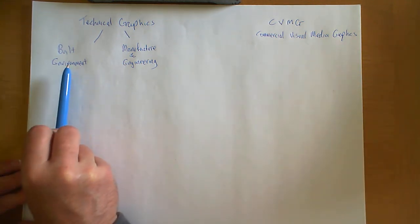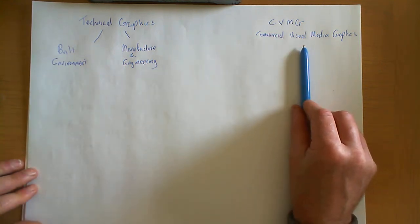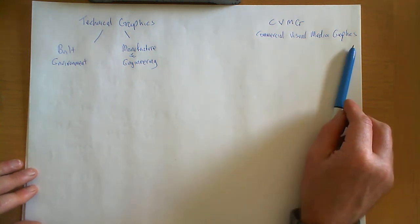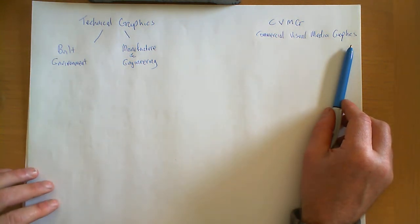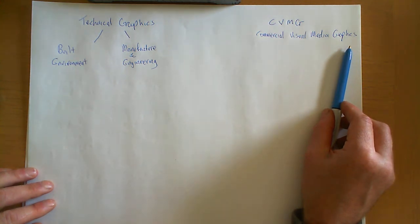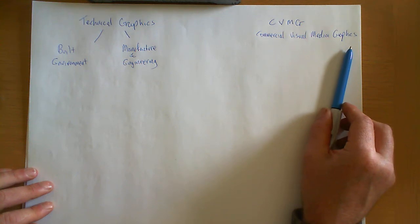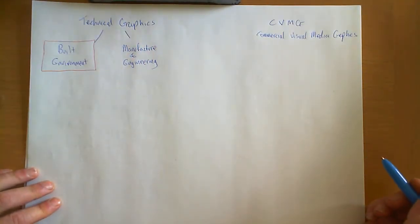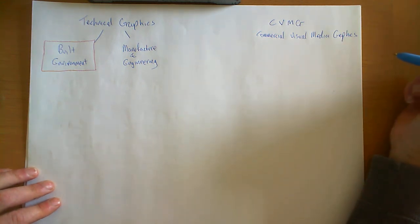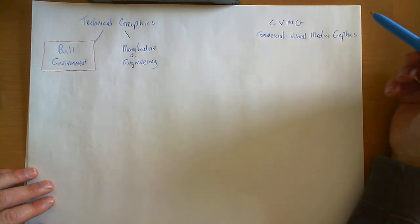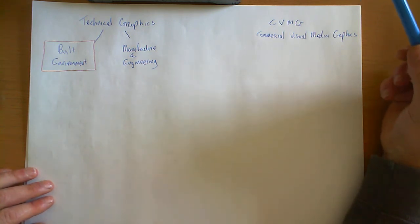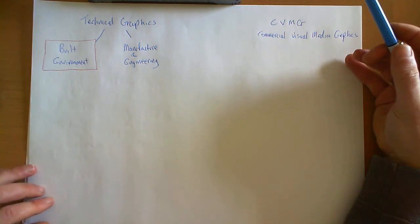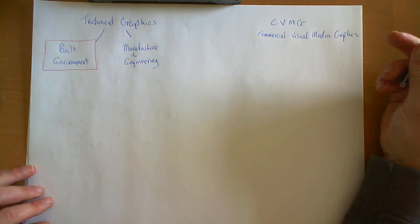So within each of these strands — the Built Environment, Manufacture and Engineering, and Commercial and Visual Media Graphics — we have a list of what are called users and also creators of graphics. Part of our task for the exam and also for your project is to understand who these people are, what they do for a job, and what type of graphics they will use and create. These roles are listed in the course assessment spec on the people resource area, around pages 9, 10, and 11. You will see a box listing the ones you need to know for your exam and for part of your project.